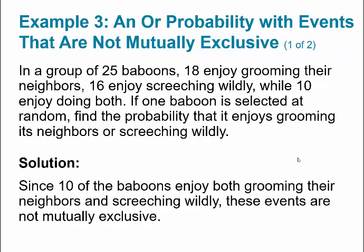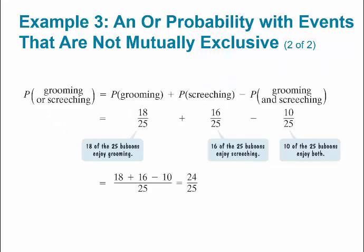In a group of 25 baboons, 18 enjoy grooming their neighbors, 16 enjoy screeching wildly, while 10 enjoy doing both. If one baboon is selected at random, find the probability that it enjoys grooming or screeching wildly. Since 10 baboons enjoy both, these events are not mutually exclusive. So: P(grooming or screeching) = P(grooming) + P(screeching) - P(both) = 18/25 + 16/25 - 10/25. That gives us 24 out of 25.